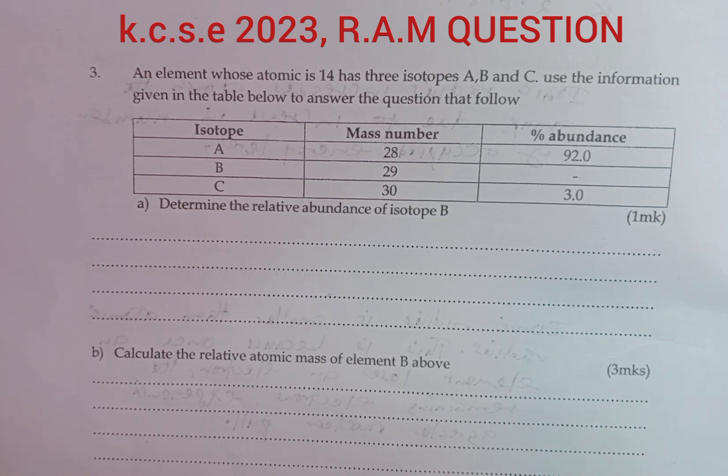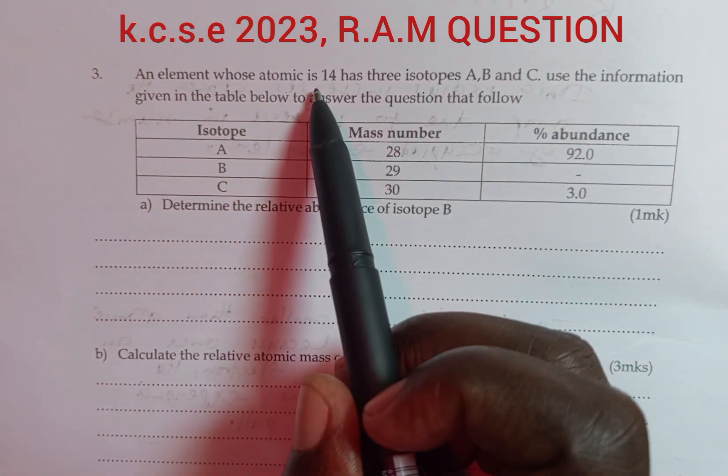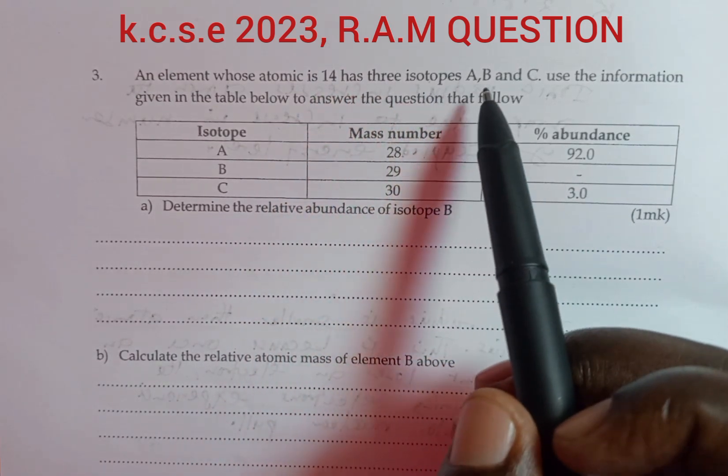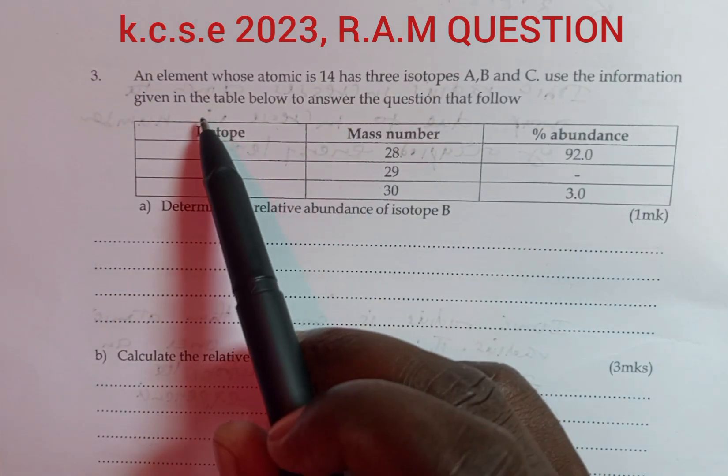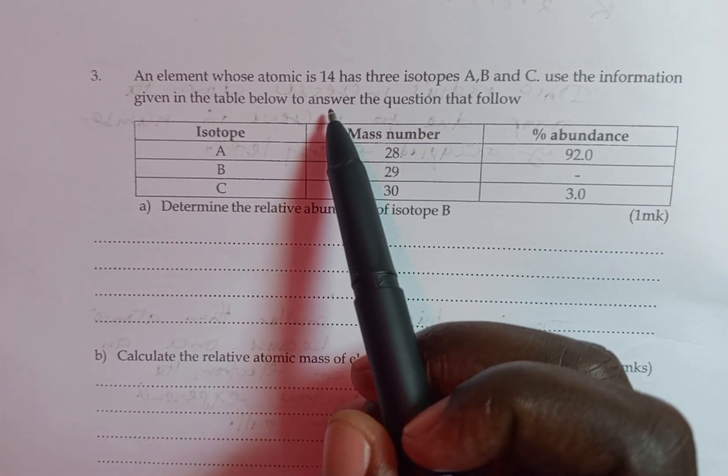A question on calculation of relative atomic mass. And the question we have reads, an element whose atomic number is 14 has three isotopes, A, B and C. Use the information given in the table below to answer the questions that follow.